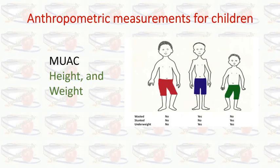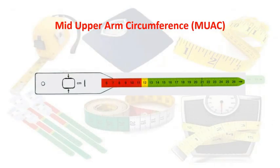For children, we measure MUAC — mid upper arm circumference — then height and weight. Using height and weight we assess wasting, stunting, and underweight in children, while MUAC is an independent measurement. MUAC is most commonly used in children under five years of age and gives an indication of the degree of wasting. It is a good predictor of mortality.